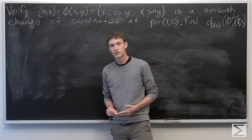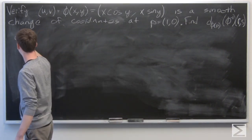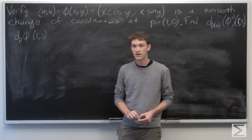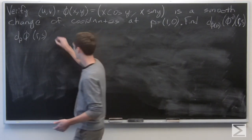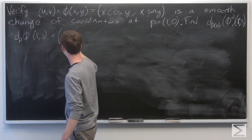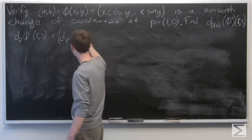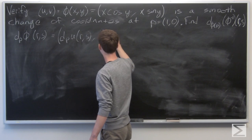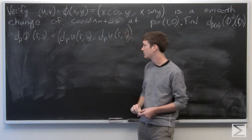We're going to want to use the inverse function theorem. In order to do so, we need to verify that the total derivative of phi at p is a bijection. We can compute the total derivative of phi in the normal way, taking the total derivative of u at p and of v at p, each with respect to (r, s).